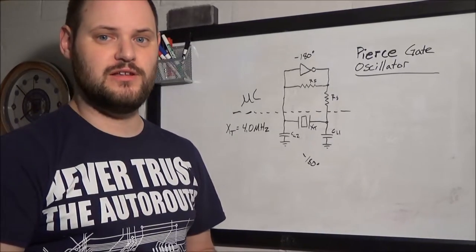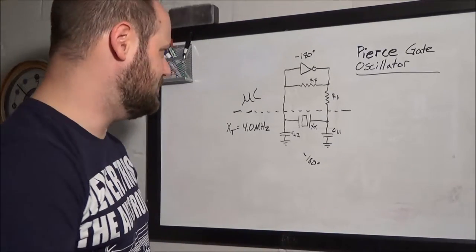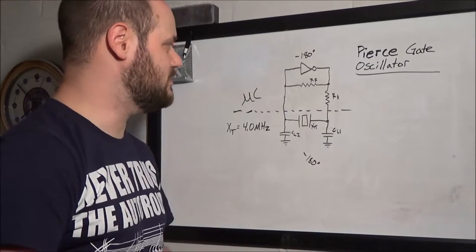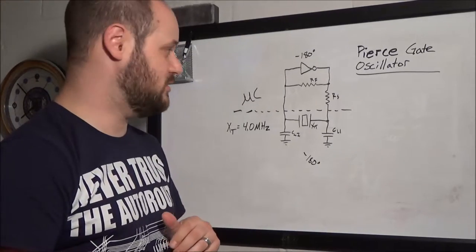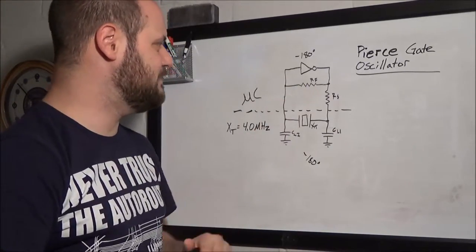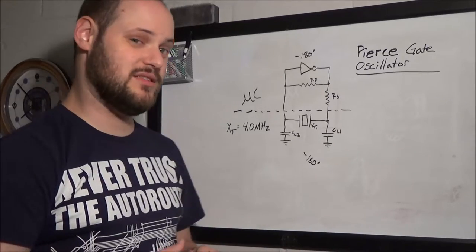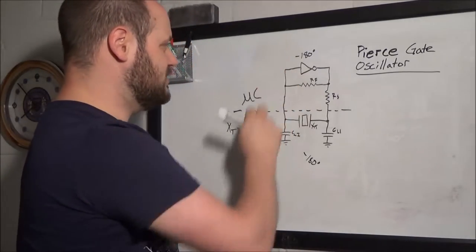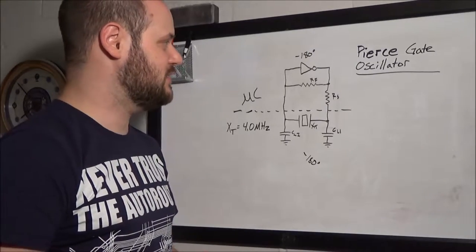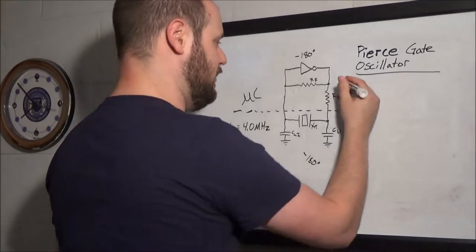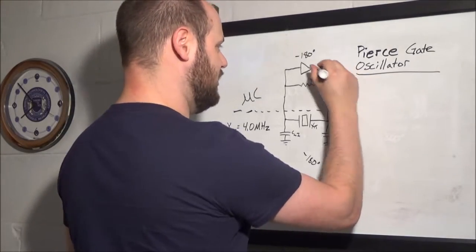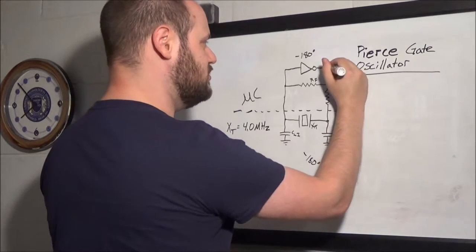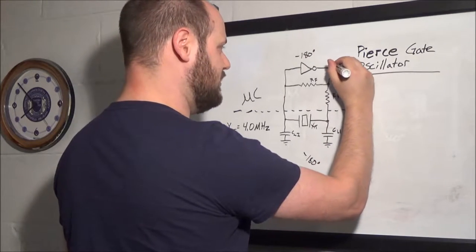So, let's look at the individual elements of the oscillator one at a time. We've already looked at the inverter, so I'm not going to go too in-depth with that, but let's look at the feedback resistor first. What is that there for? Well, the feedback resistor works in conjunction with the inverter itself. There is a parasitic capacitance, basically on the pins and internal to the gate itself.